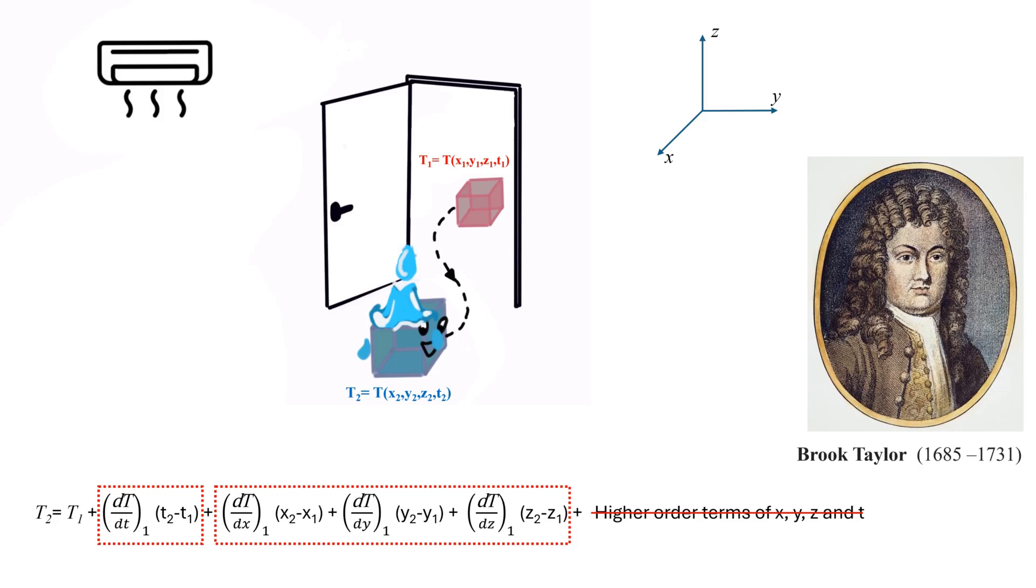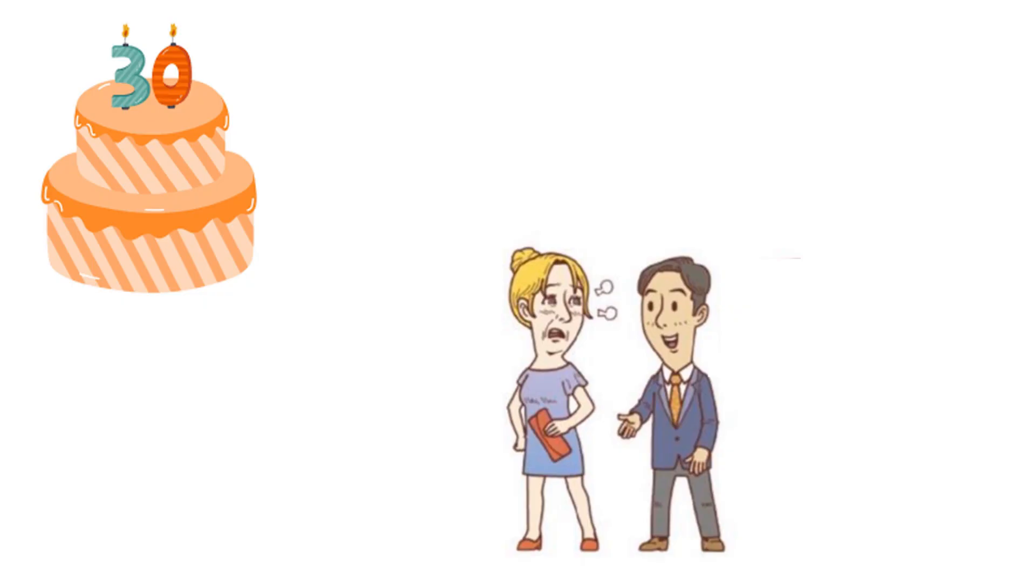Imagine you are 30 years old today. If I ask how old you will be in 10 years, you would instantly say 40. But how do you know that? It is simple. You understand that your age increases by 1 year every year. The rate of change of your age is 1.